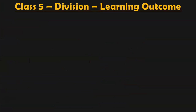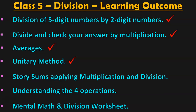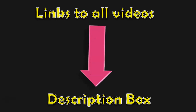Very interesting, isn't it? With that, we complete this topic. The learning outcomes for children in class 5 under the division topic include: division of 5-digit numbers by 2-digit numbers, dividing and checking your answer by multiplication, and the topic of average. In this video we saw the Unitary Method. In upcoming topics for class 5 division, we will see story sums applying multiplication and division, understanding the 4 operations, and a mental math and division worksheet. Each topic will be put as a separate detailed video in my channel, and links to all related videos will be given below in the description box.